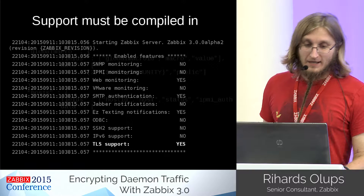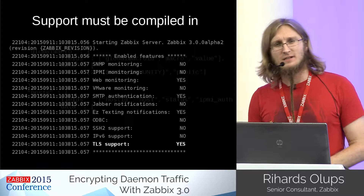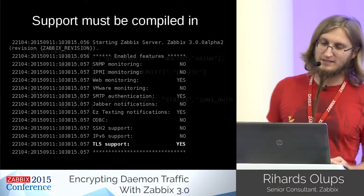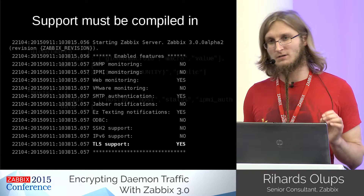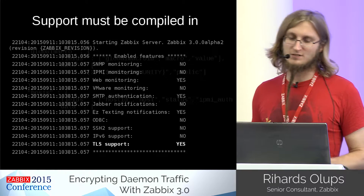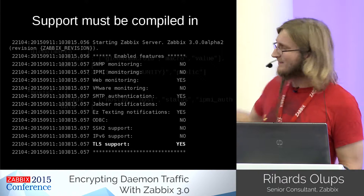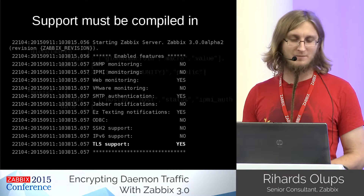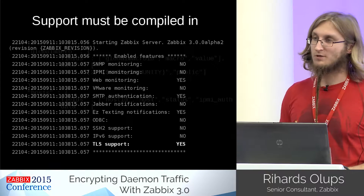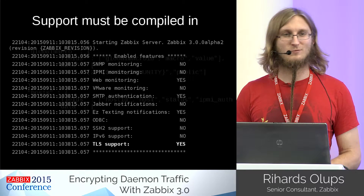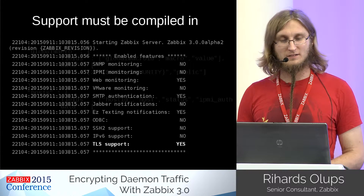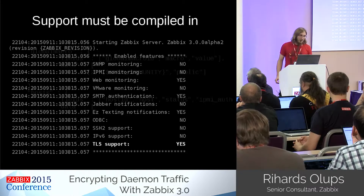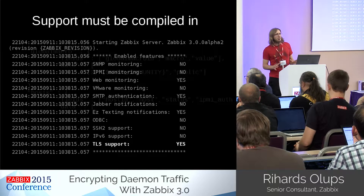For encryption to work, the support must be compiled in. In the Zabbix server log you can check for 'TLS support yes' — if that's present, you can use encryption with that daemon. This must be available for any daemon you'd like to use this feature with.